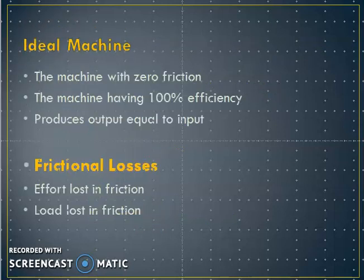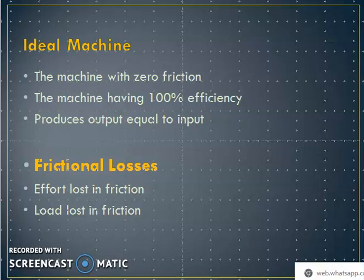An ideal machine is a machine with zero friction, or one that has 100% efficiency, or one that produces output equal to input. The next concept is frictional losses. Various parts of the machine come in contact with each other; however, the machine is unable to produce 100% efficiency due to frictional losses, which include effort lost in friction and load lost in friction.